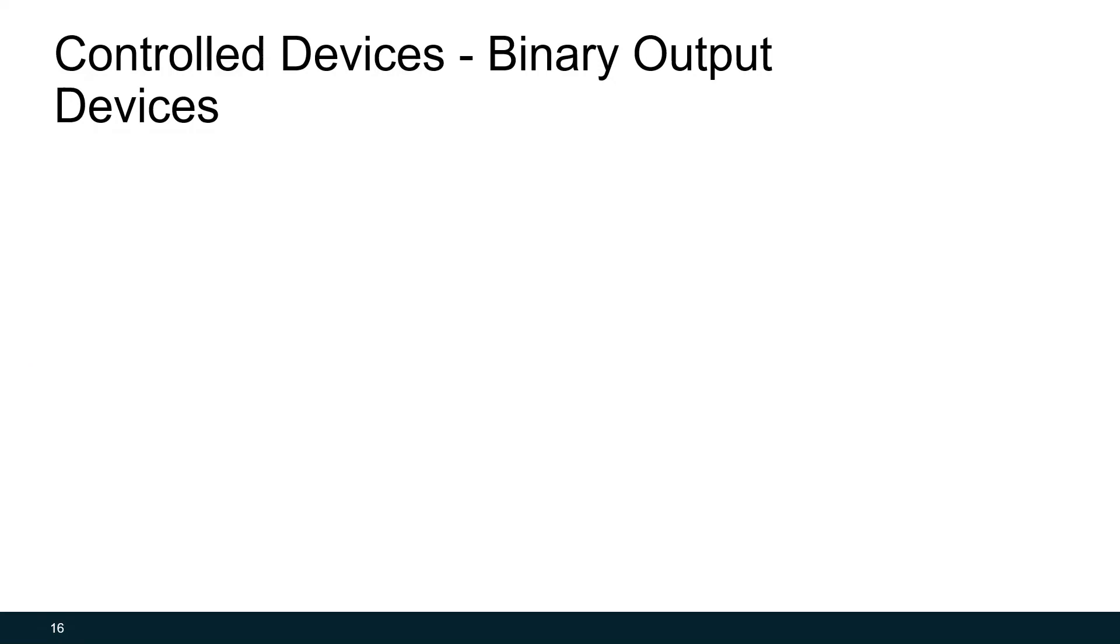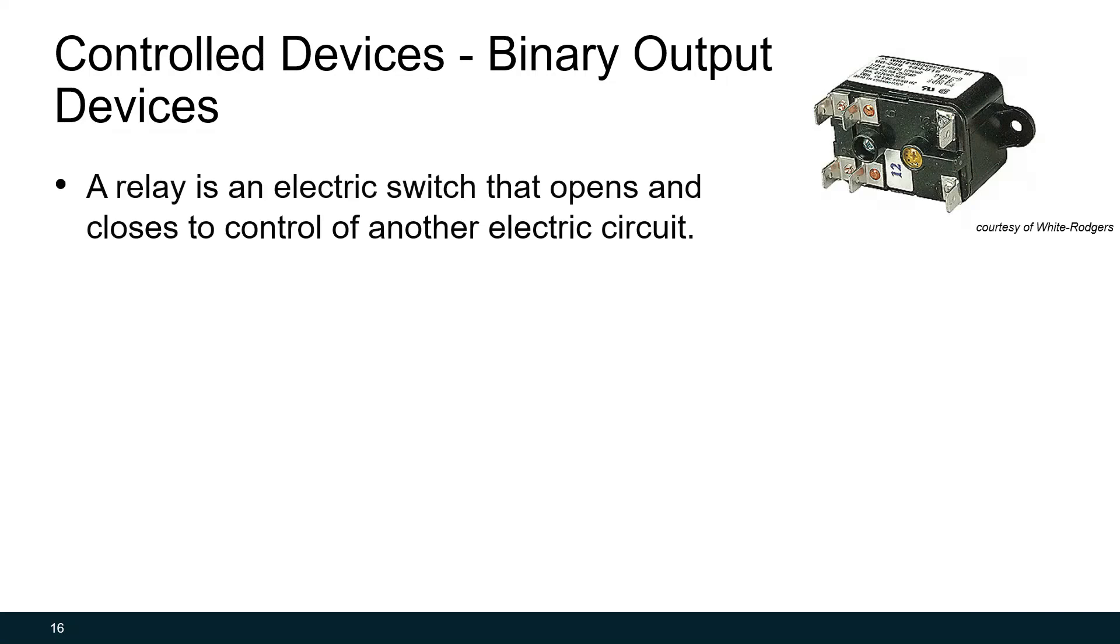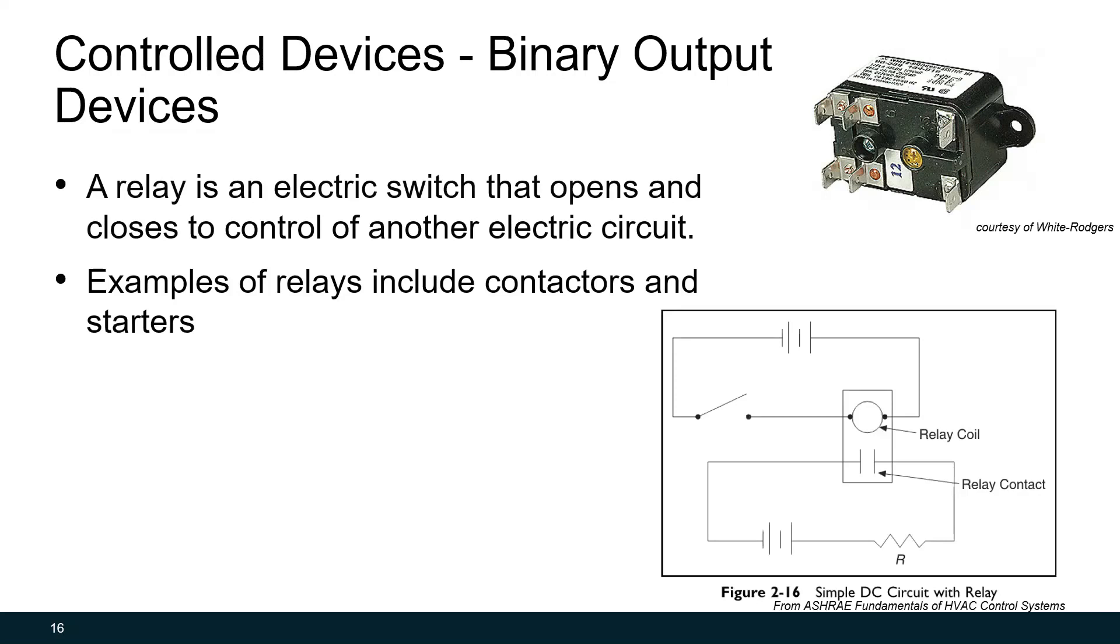We'll now go through a few examples of control devices that are common in the HVAC system. We'll start with binary output devices, and the most common binary output device is the relay. A relay is an electric switch that opens and closes to control another electric circuit. The most common version of these are motor starters, but also other equipment contactors. If you look at the bottom right figure, you'll see we have a relay coil in the top. When this switch closes with a command from the field controller, it will energize this relay coil. When this relay coil is energized, it will close the relay contact, completing the circuit that provides energy to the motor and starting the motor.